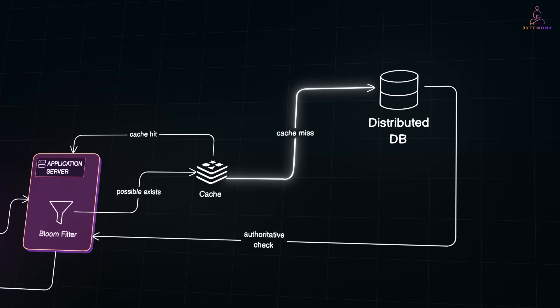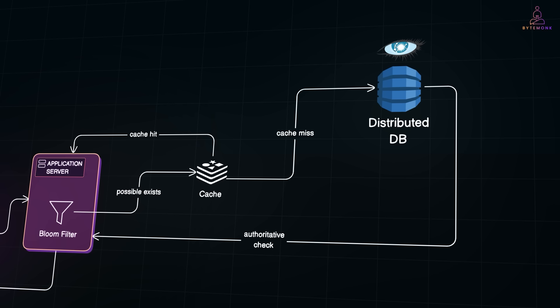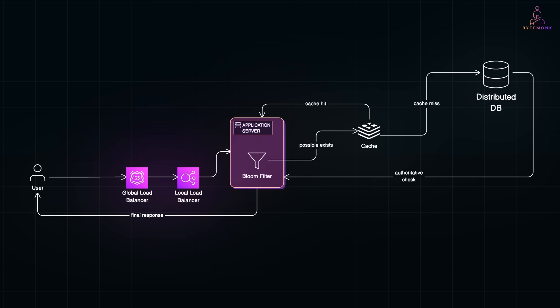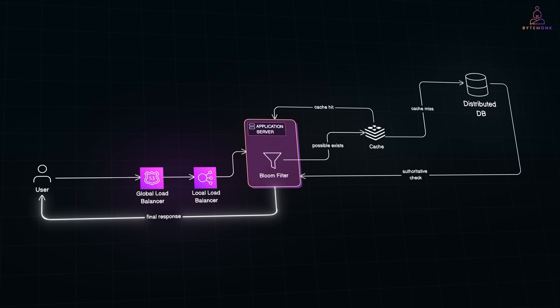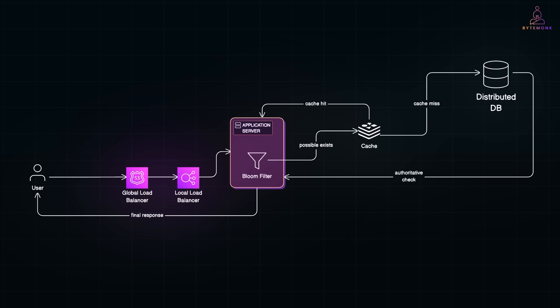Big Tech often chooses databases designed specifically for scale, like Apache Cassandra at Instagram or Amazon DynamoDB. These databases cleverly split data across hundreds of thousands of machines using strategies like consistent hashing, so the load gets evenly distributed and lookups happen incredibly fast. The authoritative check happens here and responds definitively on username existence. The application server then sends the final response back through load balancers to the user. By combining quick probabilistic filters, memory caches, distributed databases, and smart load balancing, companies like Google, Facebook and Amazon ensure you instantly know if your chosen username is taken — even among billions of users worldwide.